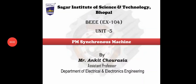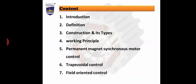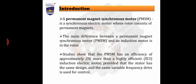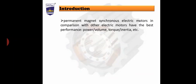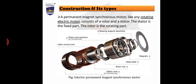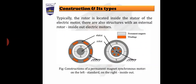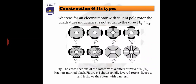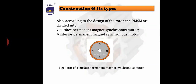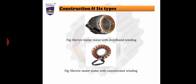Hello everybody. Today we will discuss the permanent magnet synchronous machine: its construction, working principle, and control scheme. This is the content we will study. In a previous lecture we covered the construction and types of rotor, and now we move to distributed winding and concentrated winding.